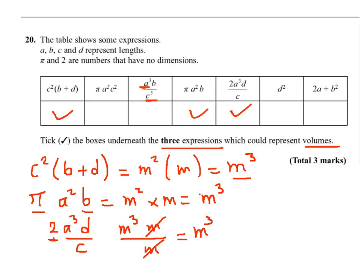d squared is square meter and this is nonsense, the last one. So these are my three expressions which represent volume.